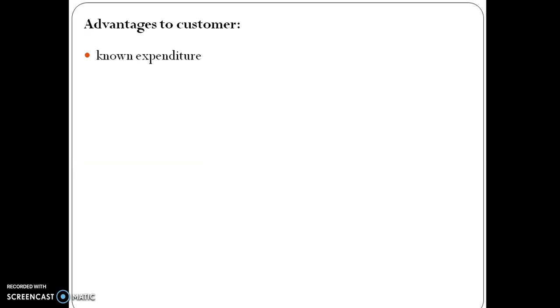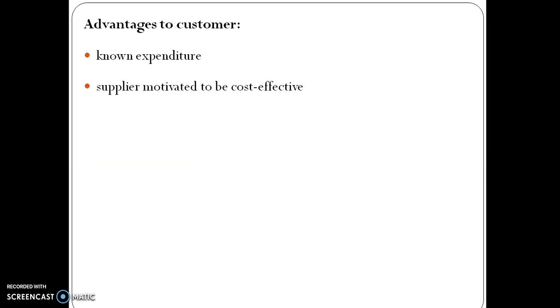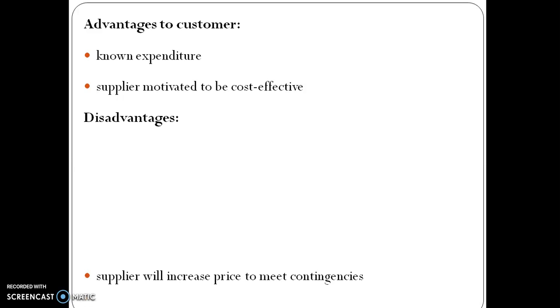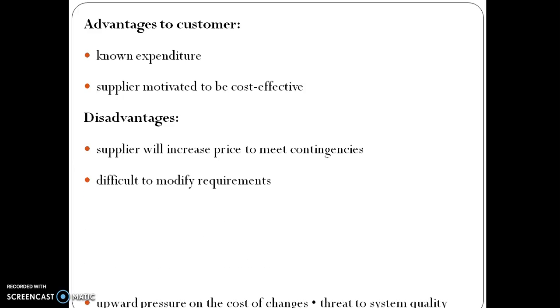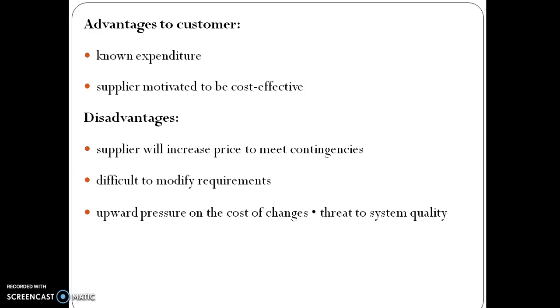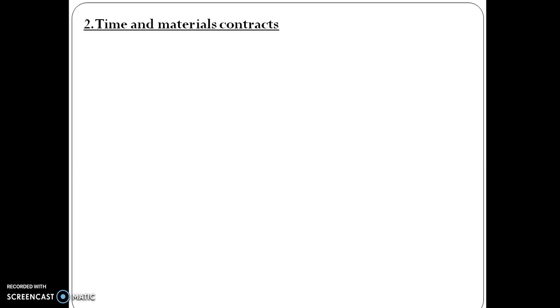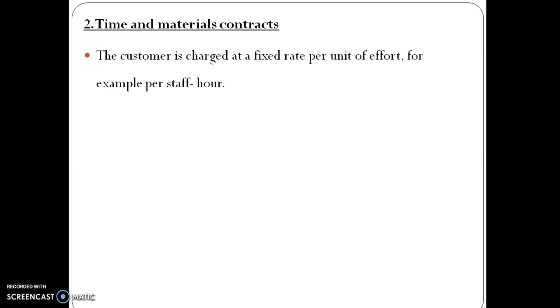Advantages to the customer: no expenditure surprises; supplier is motivated to be cost effective. Disadvantages: the supplier will increase price to meet contingencies; it is difficult to modify requirements; contracts put pressure on the cost of changes and can be a threat to system quality.